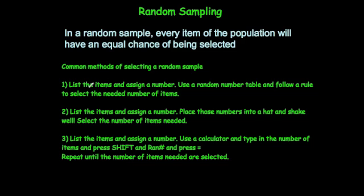Firstly, you can list all the items in the population — maybe put them all in alphabetical order and assign them each a number. Then you can use a random number table, which can be found in textbooks or online, and follow a rule to select the number of items needed.